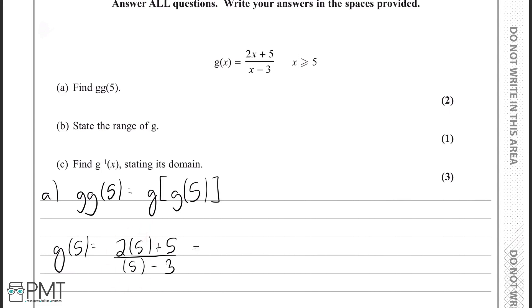Now, simplifying this, we'll have 10 plus 5 over 2, which is 15 over 2.